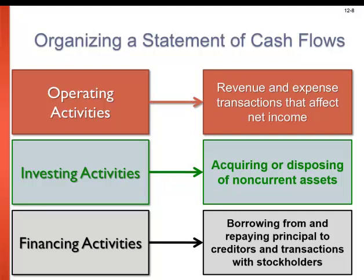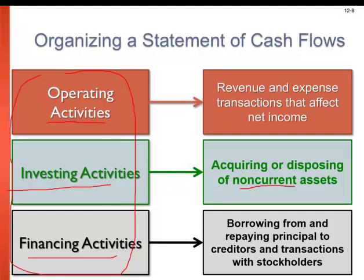We're going to organize the statement of cash flows into three categories. If you get nothing else out of this chapter, at least remember these categories. The first is operating activities — the normal day-to-day operations of the business related to making sales and paying expenses. The next is investing activities, which includes the acquisition or disposal of non-current assets — those long-lived assets that provide economic benefit for more than a year. And lastly, financing activities include borrowing from and repaying principal to creditors, and transactions with stockholders' equity — anything done to finance the business.